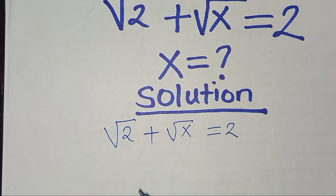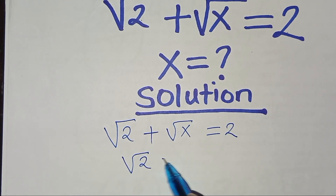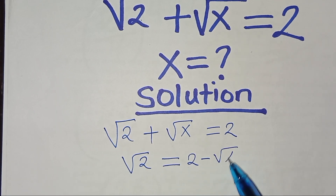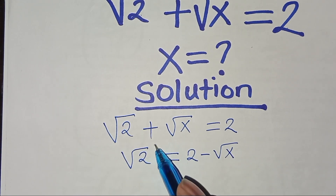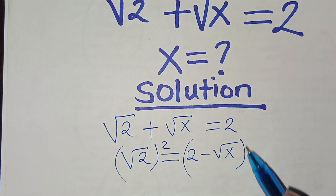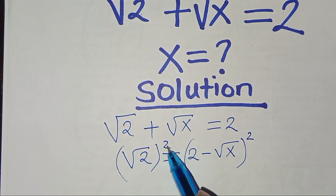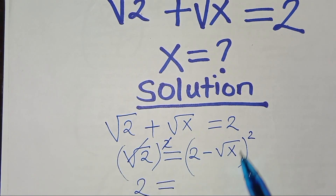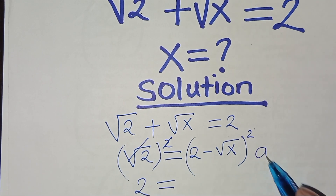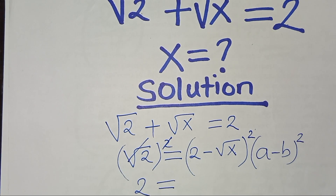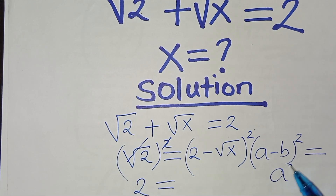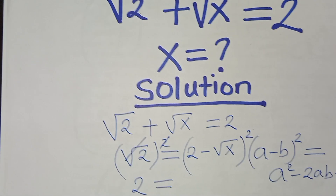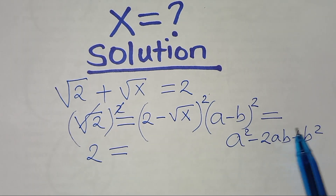The first step is to isolate the square root of 2 by moving square root of x to the right-hand side, giving us: square root of 2 equals 2 minus square root of x. Next, we square both sides to eliminate the square root sign. The right side is in the form (a − b)², which expands as a² − 2ab + b².